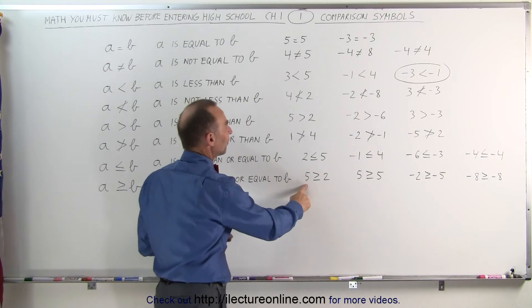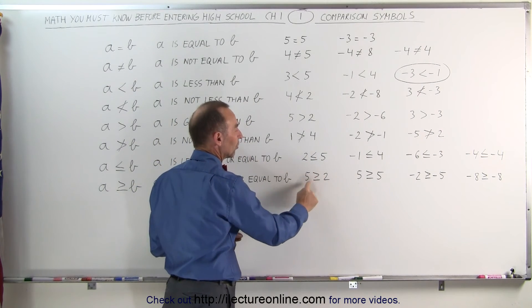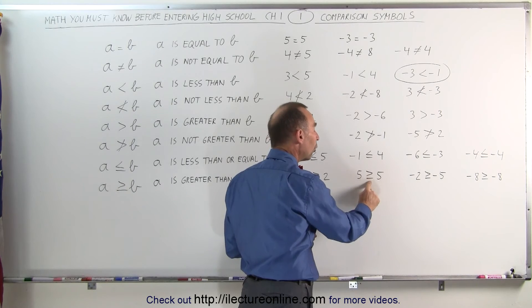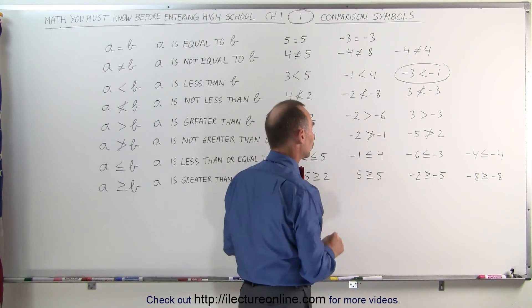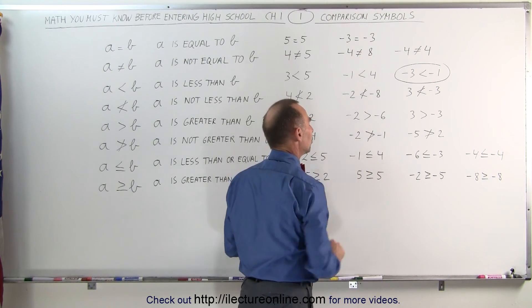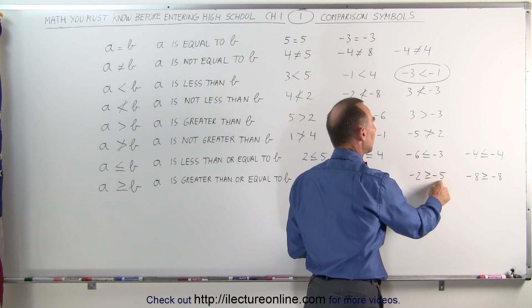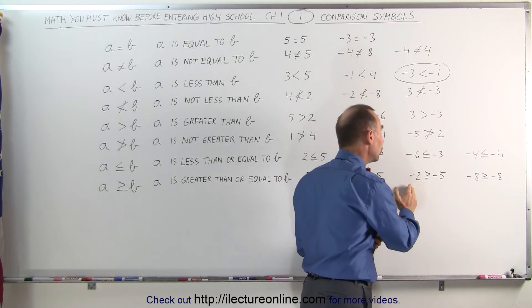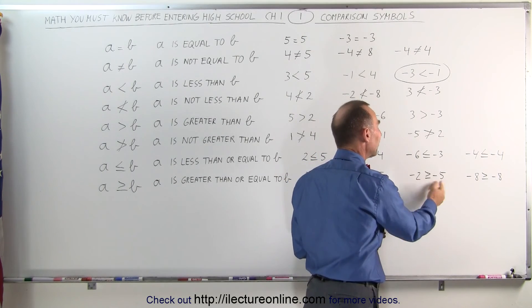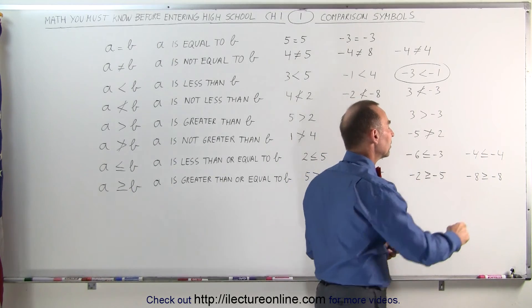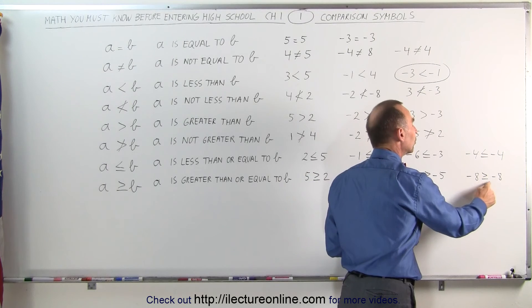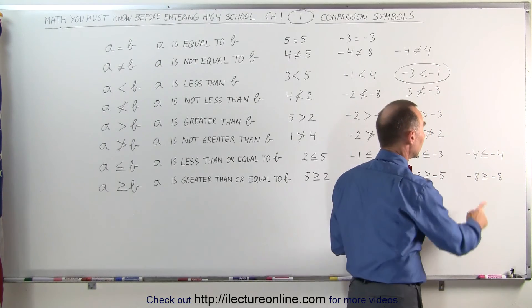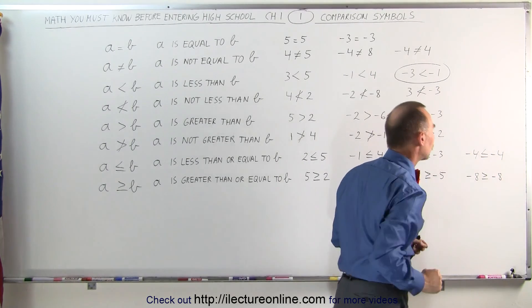For greater than or equal to: 5 is greater than or equal to 2 — since it's greater than, that's true. 5 is greater than or equal to 5 — since the 'or equal to' condition applies, that's also true. Negative 2 is greater than or equal to negative 5 — negative 2 is indeed greater than negative 5 because negative 5 is further left on the number line. And negative 8 is greater than or equal to negative 8 — it is equal, so the 'or' condition makes this a true statement.